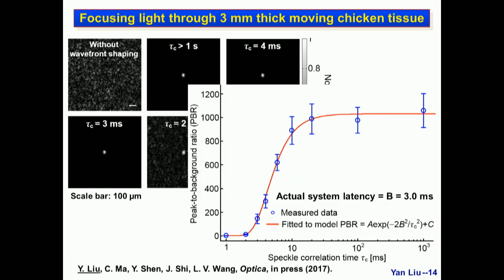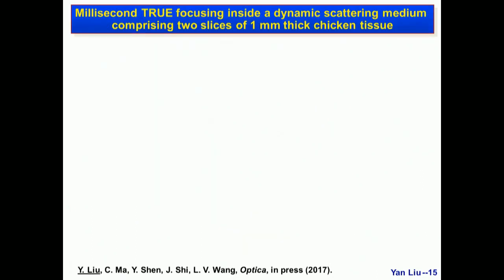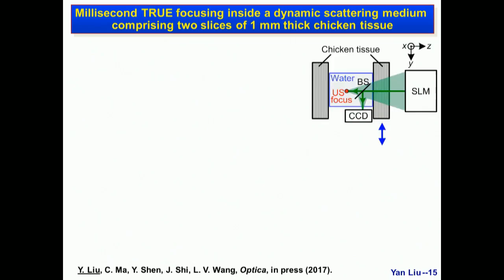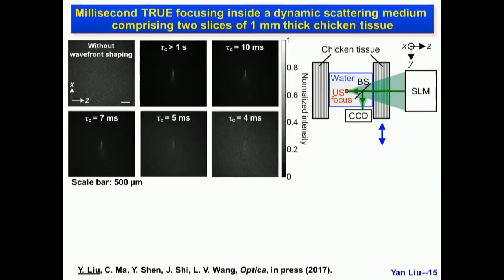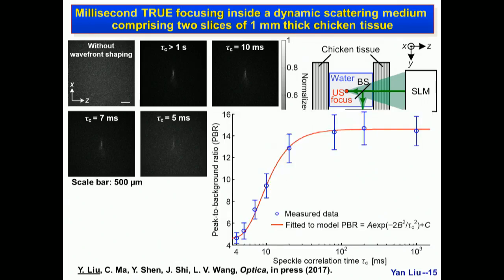We also focus light inside a scattered medium comprising two slices of chicken tissue using TRUE focusing. If TRUE focusing works, the phase-conjugated beam should converge to form a focus. We use a beam splitter to create a copy of the focus to measure it with a camera outside the water tank. Even when the speckle correlation time is 4 milliseconds, we can still observe some focus; without TRUE focusing, no focus is seen. Plotting peak-to-background ratio versus speckle correlation time and fitting to the theoretical model gives an actual system latency of 6 milliseconds.